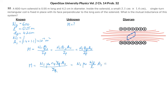Now let's plug in numbers. The number of turns of the secondary is 1. Then we have 4π times 10 to the negative 7 tesla·meters per amp. The number of turns in the primary is 600. The length is 0.55 meters. The area of the secondary is 1.4 times 1.1 times 10 to the negative 4 square meters. So we get a mutual inductance of 2.11 times 10 to the negative 6 henrys.